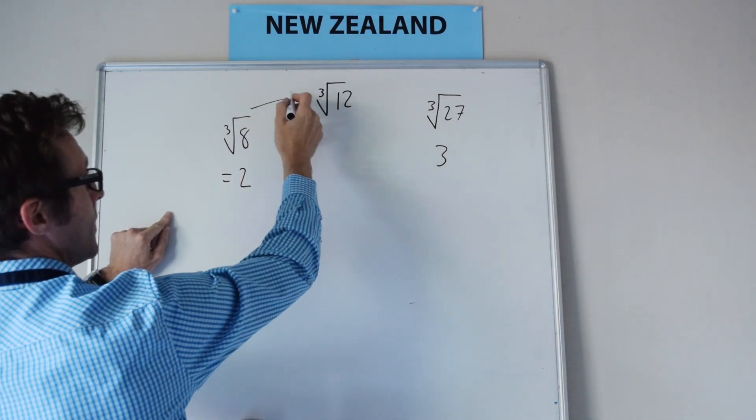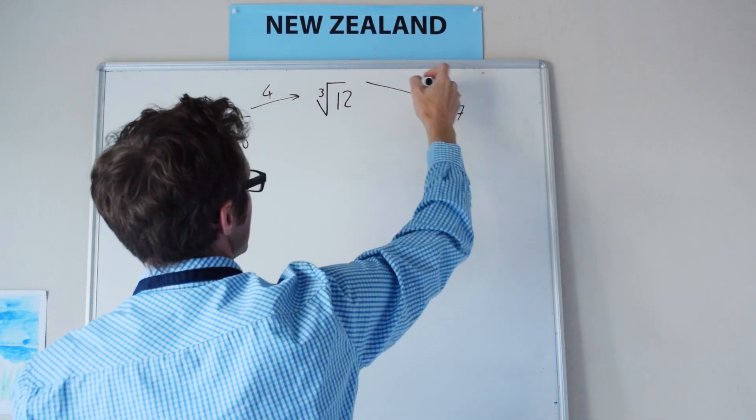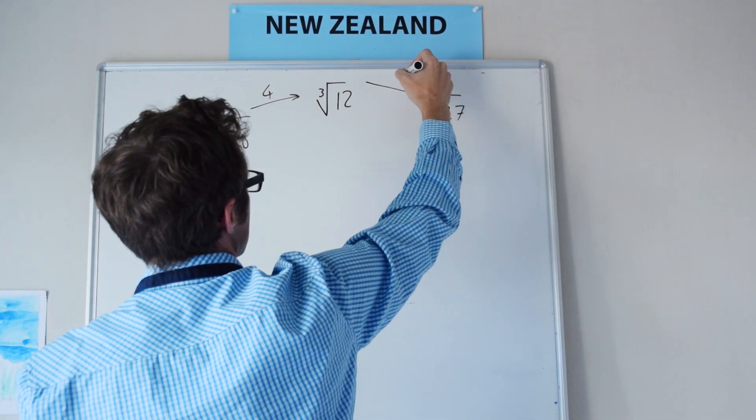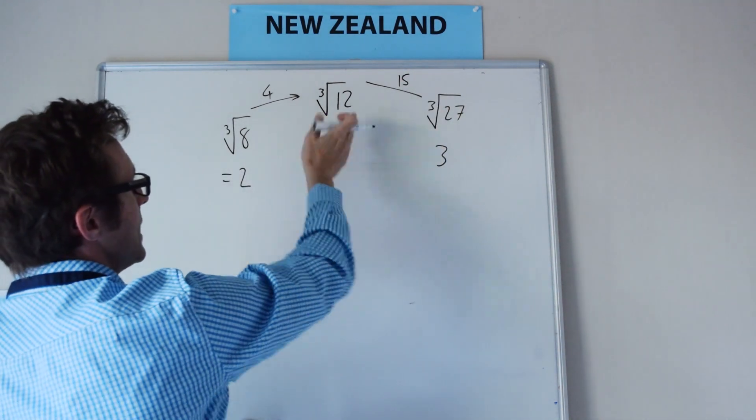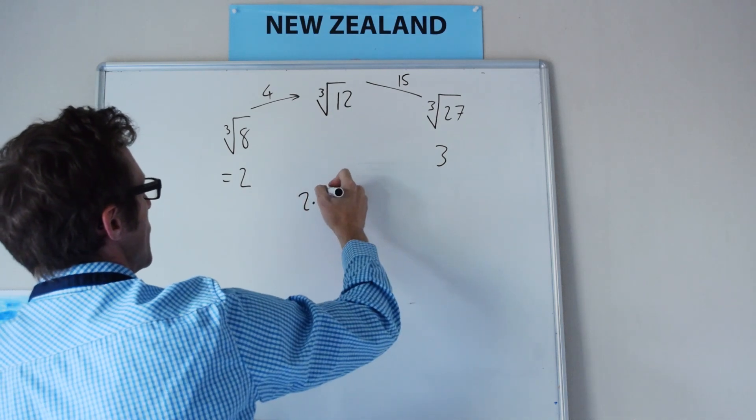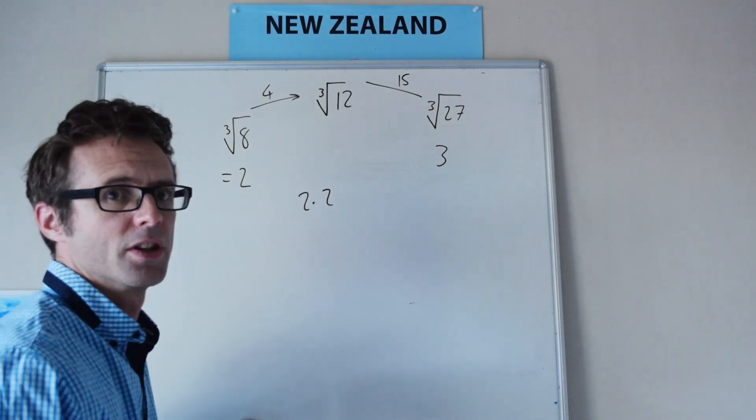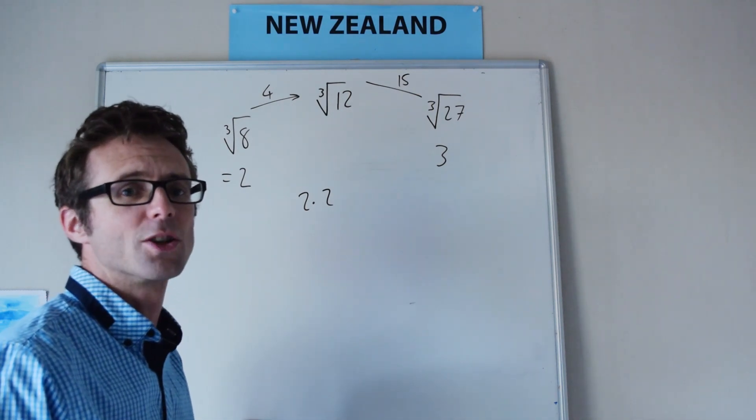Now, we can see that this is only 4 away from this one, whereas this one is, what is it, 12, 15, I think. Yes, sorry, 15 away from here. So, clearly much closer to this, so we could make an estimate at, say, maybe 2.2 or thereabouts. So, that's how we do rough estimates of cube and square roots.